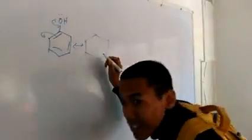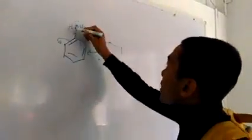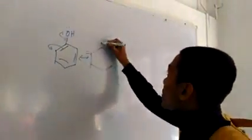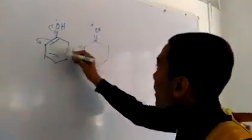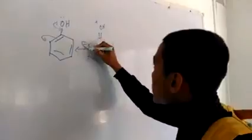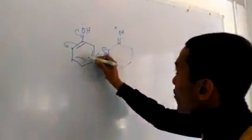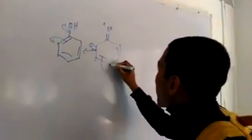The extra electron goes outside, it will come like that and the lone pair will come this way and this will become positive. And again, this will attack this ring and this one will have to break again.